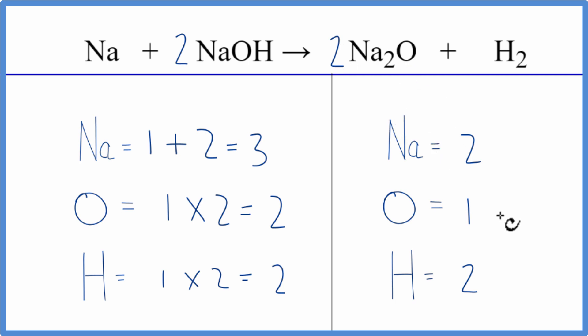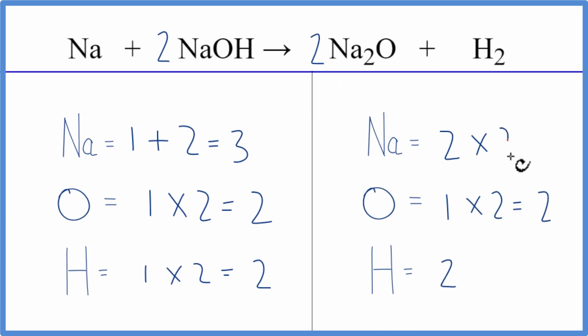Sodiums, two times 2, that gives us four. So we're almost there with the sodium. We just need one more sodium on the reactant side. What we can do is put a coefficient of 2 in front of the sodium here.